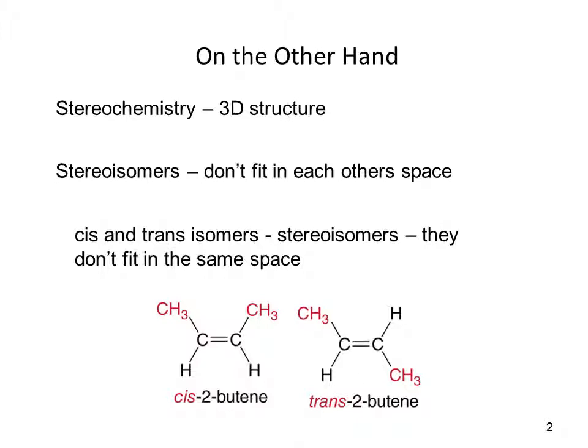Stereoisomers are compounds that have the same connectivity — meaning they have the same carbons attached to each other and the same bonds — but they're arranged differently in space so they don't fit into each other's space. We've already seen an example of stereoisomers, and that is the cis-trans isomers. You can see cis-2-butene and trans-butene have the same connectivity, but their arrangement in space is different. Because the double bond can't flip or twist, these two molecules do not fit in each other's space, and so they are stereoisomers.